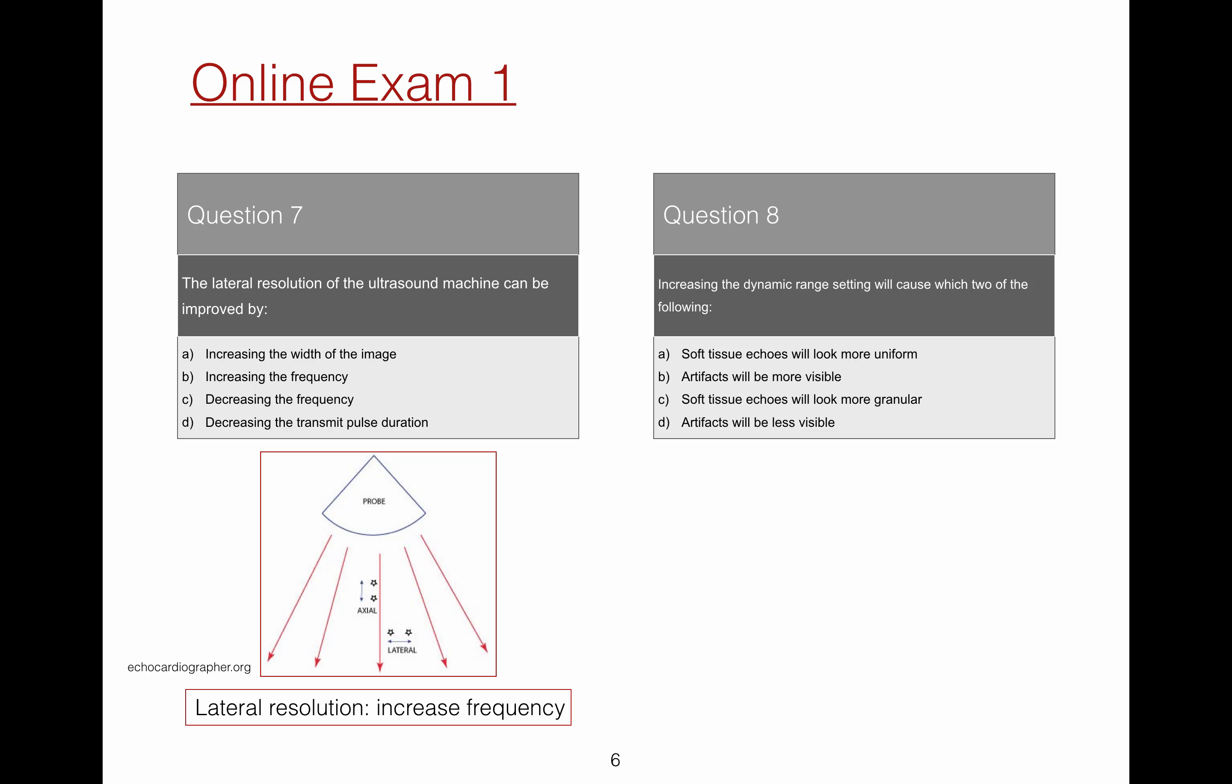Question 8. Increasing the dynamic range will cause which of the following two? Increasing the dynamic range means that soft tissue appears more uniform and artifacts are more visible.